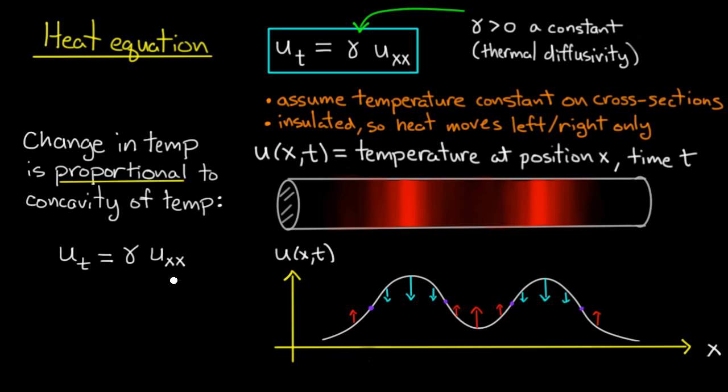In an equation, u_t, which is the change in temperature, equals gamma u_xx, being the concavity of the temperature profile.